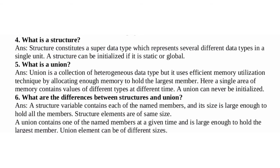A union can never be initialized. What are the differences between structures and union? A structure variable contains each of the named members and its size is large enough to hold all the members. Structure elements are of same size. A union contains one of the named members at a given time and is large enough to hold the largest member. Union elements can be of different sizes.